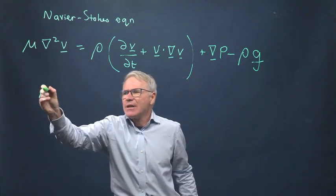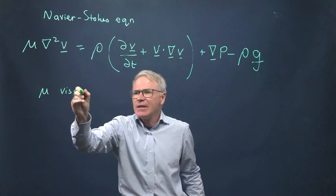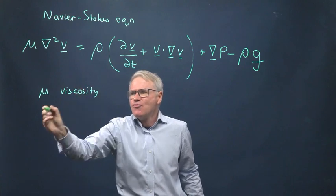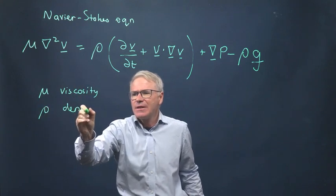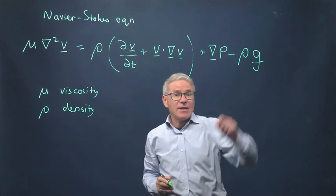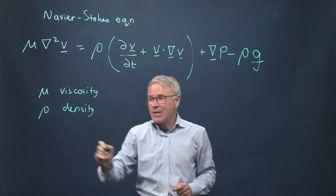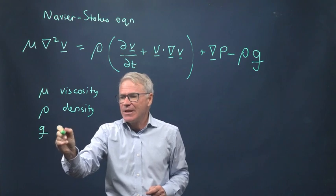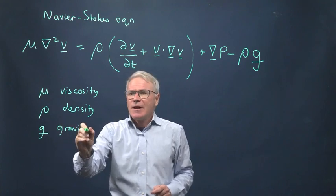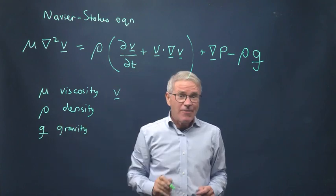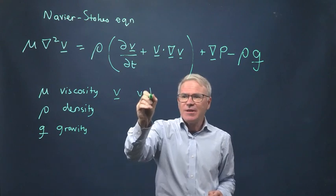So mu is the viscosity. Rho is the density. G is the acceleration due to gravity. And V is a vector quantity. This is the fluid velocity.